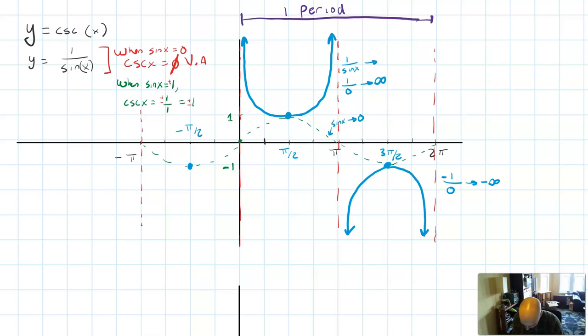You have to have a full cycle to create a period of the graph. Period means one full cycle. And so a full cycle of the cosecant and secant graphs is going to be one curve opening up, and another curve opening down.